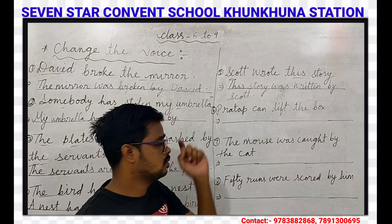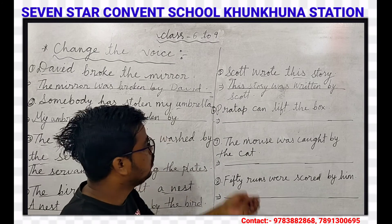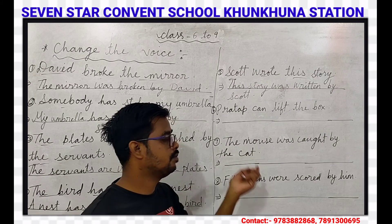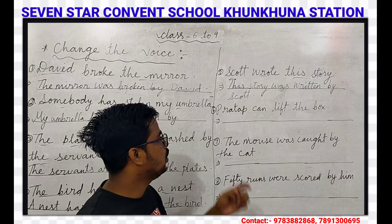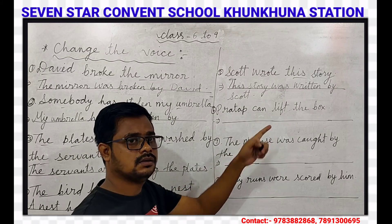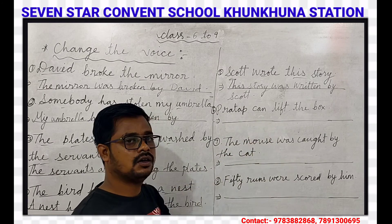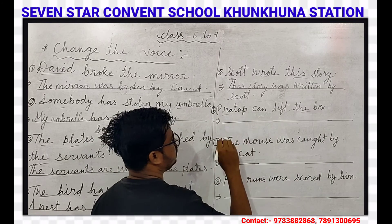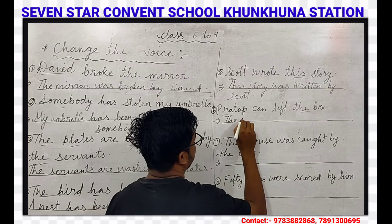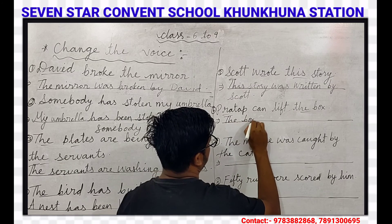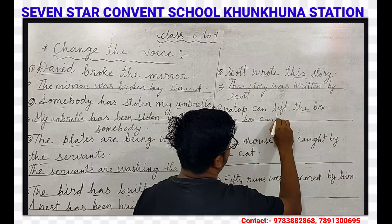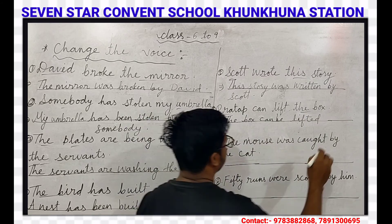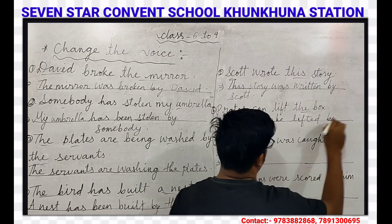Our next question is: Pratav can get the box. Here it is simple present tense and the helping verb 'can' is present. The formula to form the passive voice is different here. We have to use: can + be + verb third form. The box will take the place of the subject. The box can be lifted by Pratav.